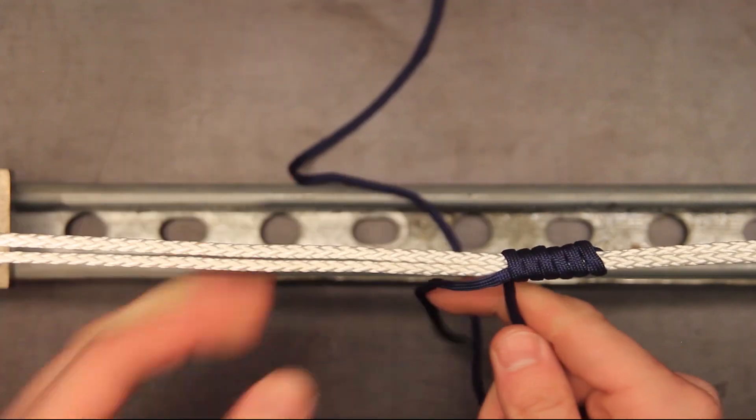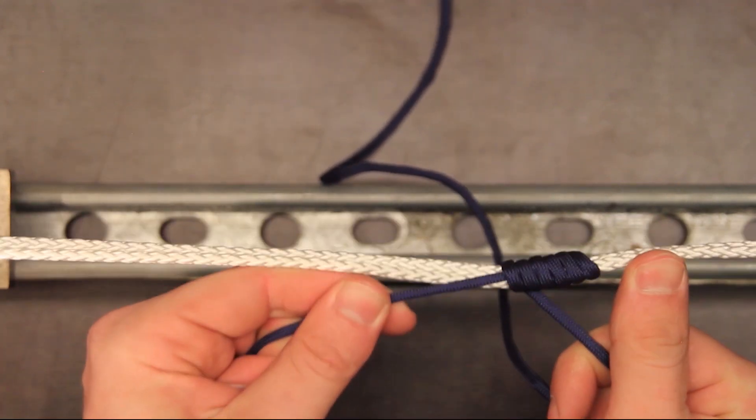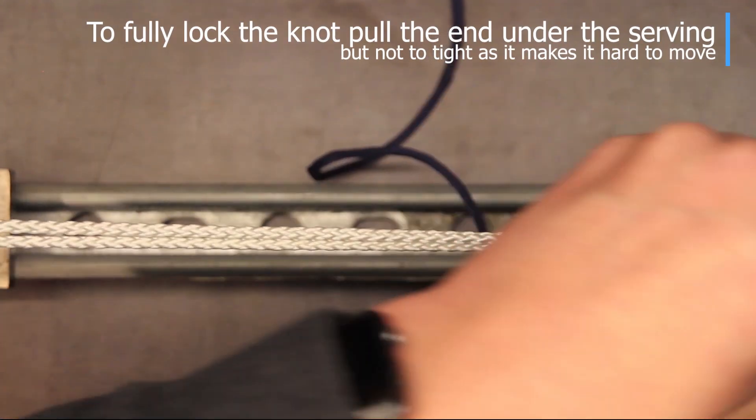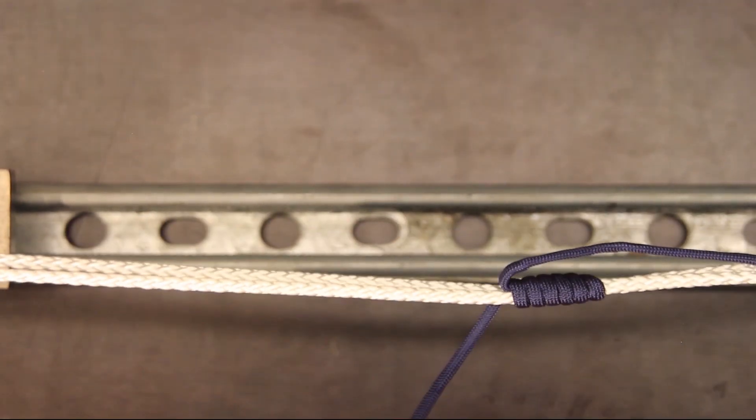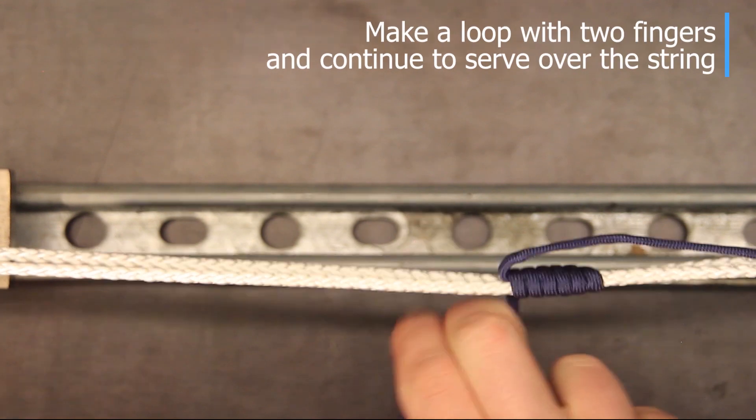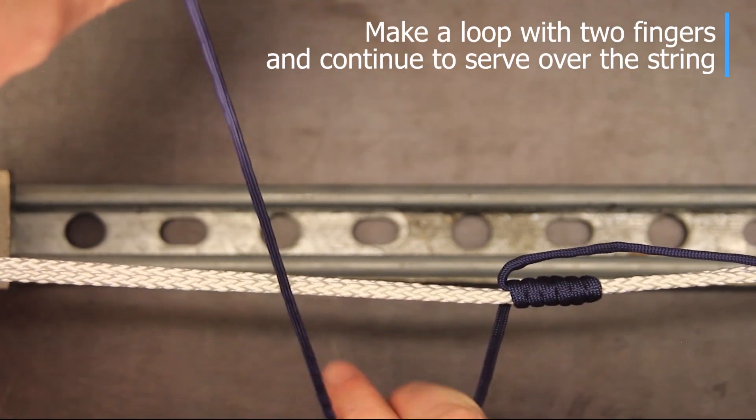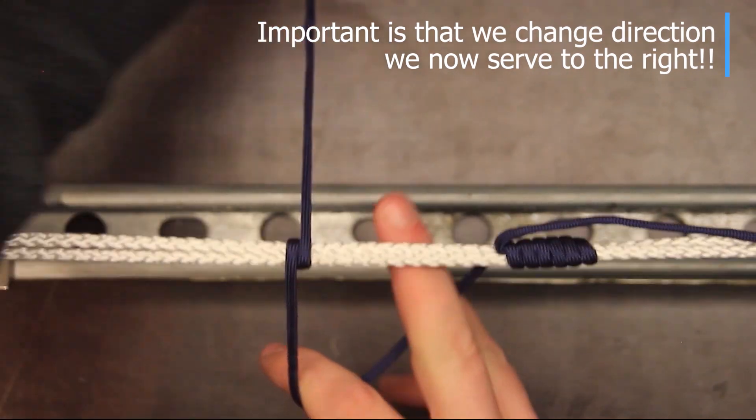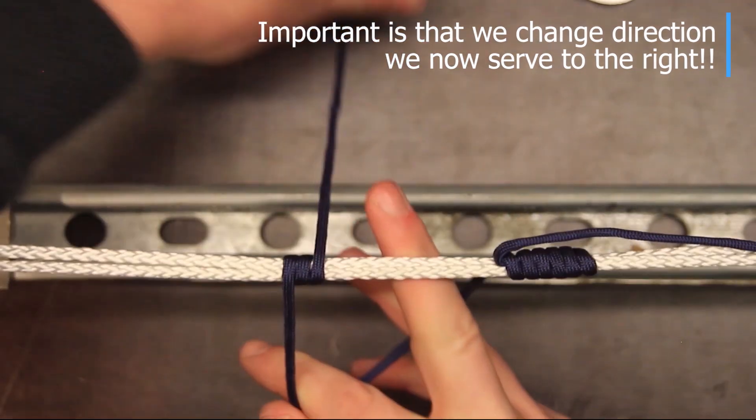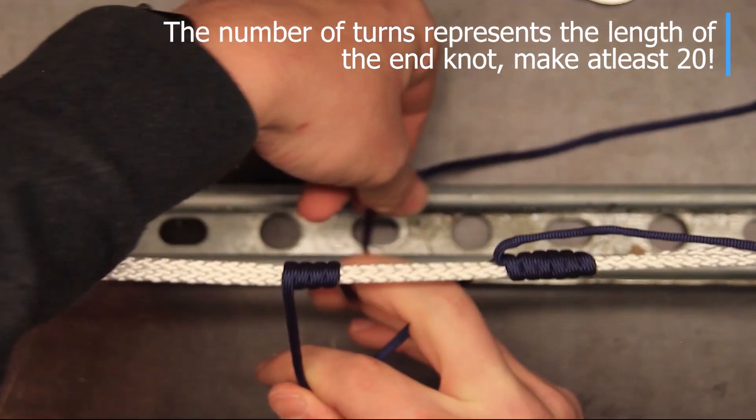Just lock it in pull a bit on the serving material but not too much as it will lock this piece of serving in very tightly and you cannot move it. Now we're going to make a loop again serve the amount of turns through that loop.